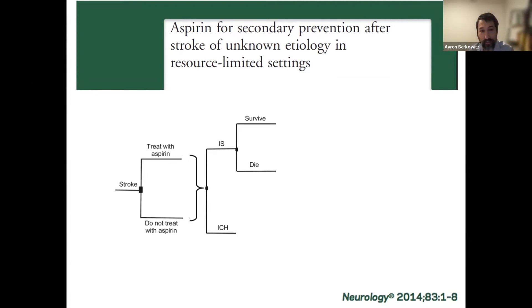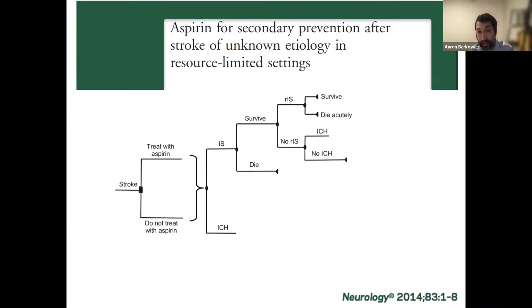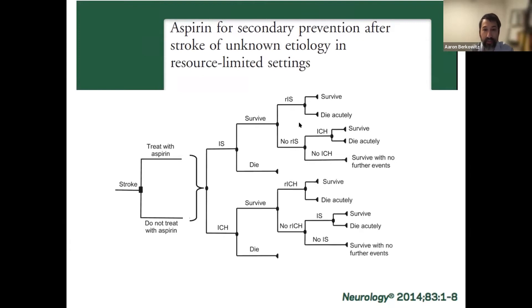The model looks at patients who either had an ischemic stroke or an intracerebral hemorrhage, acknowledging that we don't know which one it is. From the initial ischemic stroke, the patient could survive or die, could have a recurrent ischemic stroke from which they survive or die, could have an intracerebral hemorrhage, or could make it through another year with no further clinical events. Similarly on the hemorrhage side, there's the possibility of recurrent hemorrhage or an ischemic stroke — all modified to some extent by aspirin, either decreasing the risk of recurrent ischemic stroke or increasing the risk of intracerebral hemorrhage.